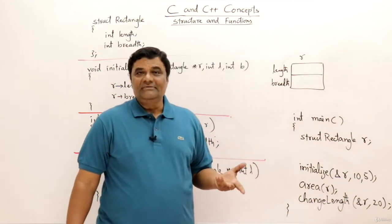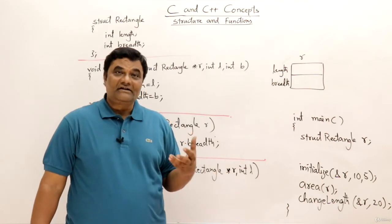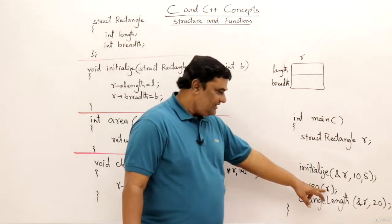Then area, for that we don't have to make any changes. Just we want the result, that is length into breadth. So this is called by value.